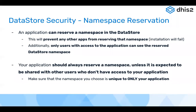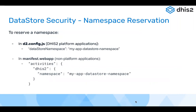You should also make sure that the namespace you choose is unique to only your application. You don't want to choose something another developer will also choose — then you'll have conflicts, and one of your applications won't be able to be installed, or they'll conflict trying to use the same data source. In a d2.config.js platform app, you set the datastore namespace key to the name you want to reserve. In manifest.webapp for non-platform applications, it's in the activities d2.config.js object space.